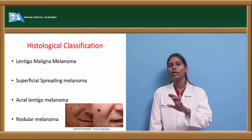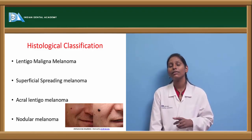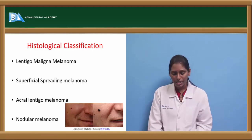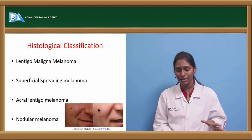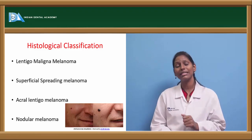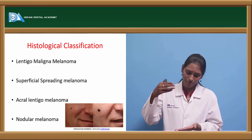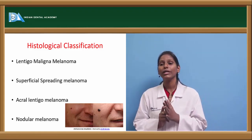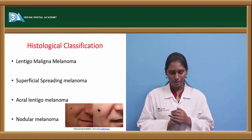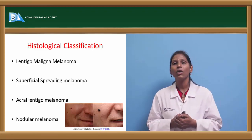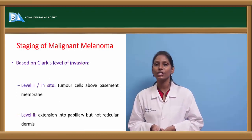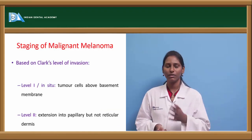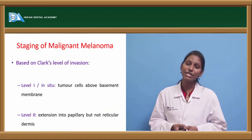The first three types follow a radial growth phase. Nodular melanoma has a vertical growth phase — it is the most malignant of all. It usually occurs in younger age groups, penetrates vertically downwards, shows uniform pigmentation with well-circumscribed borders, ulcerations are usually present, and it presents as a convex palpable lesion.